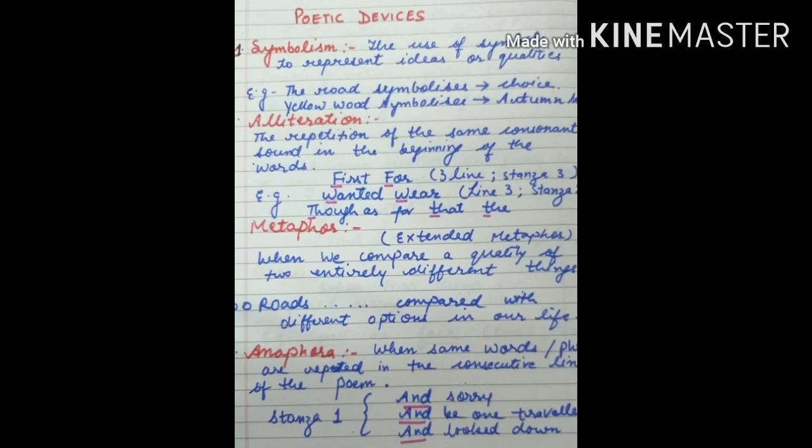First poetic device: symbolism. The use of symbols to represent ideas or qualities is called symbolism. In this poem, the road symbolises choice and yellow wood symbolises autumn season. These are symbols used to represent ideas. Second: alliteration — the repetition of the same consonant sound at the beginning of words.